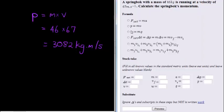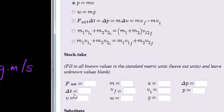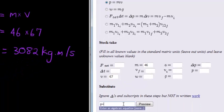Let's fill it in here. So we have that formula, mass times velocity. Mass is equal to 46, velocity 67. When we substitute here, we have p is equal to 46 times 67.